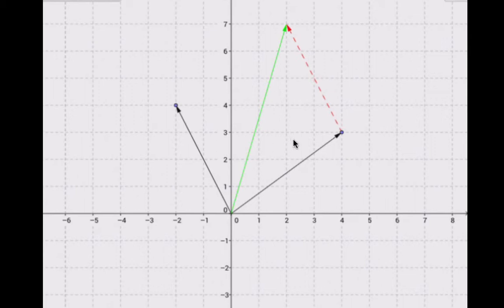Similarly, we could have started in the other direction. Since we know that addition is commutative, vector addition, which was just defined coordinate-wise, should also be commutative. So if we started with our vector w and added our vector v, we should see another vector that also gives us our vector sum.